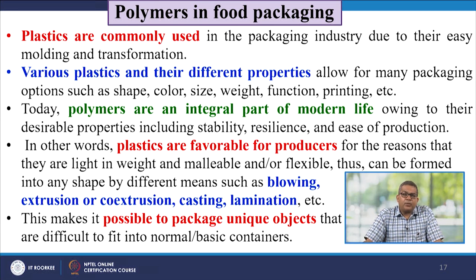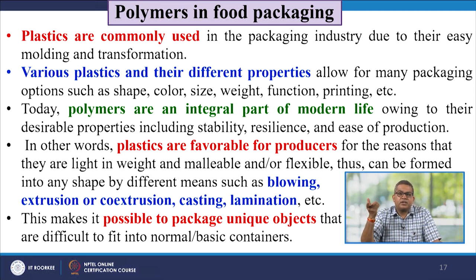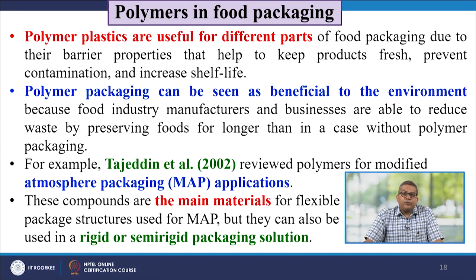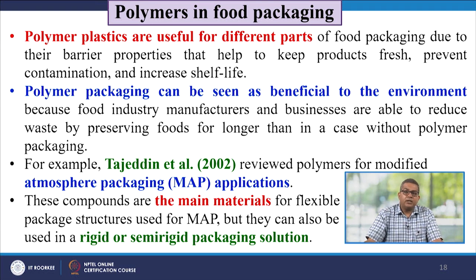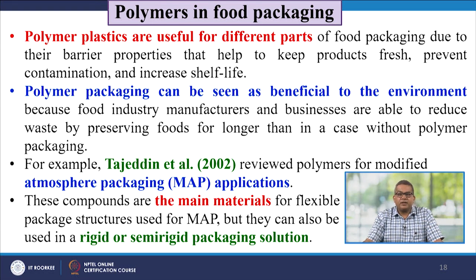Because of their desirable properties including stability, resilience, and ease of production, plastics or polymers are favourable to producers as they are light in weight, malleable and flexible. They can be formed into any shape by blowing, extrusion or co-extrusion, casting, and lamination. They are useful in food packaging due to their barrier properties that help keep the product fresh, prevent moisture ingress, prevent contamination and increase shelf life. Polymer packaging can also benefit the environment by reducing waste through preserving foods longer.